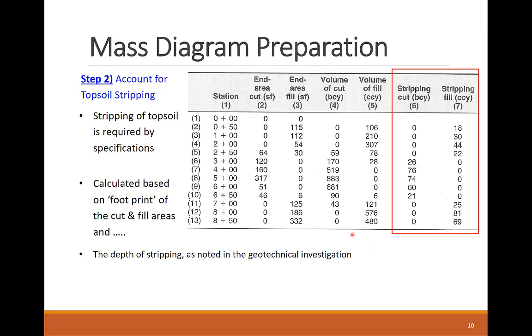From the geotechnical report and the cross-section views, the topsoil stripping volume is provided for both the cut and fill part of each station segment. The topsoil stripping volume is calculated based on the footprint of the cut and fill areas from the layout view, times the stripping depth as recommended by the geotechnical report. Now, how do these topsoil volumes affect the cut and fill volumes we calculated from the previous step?